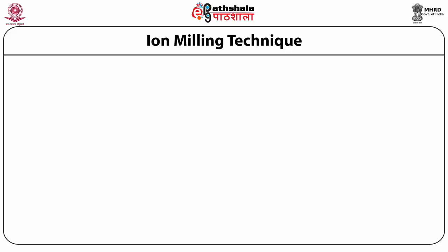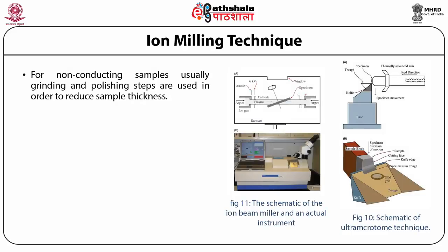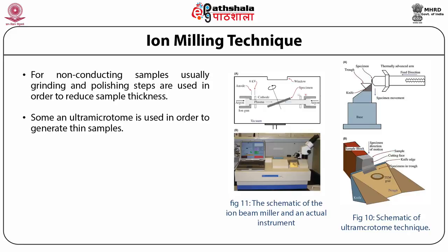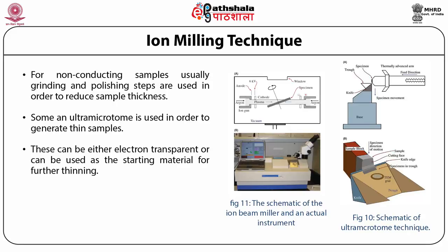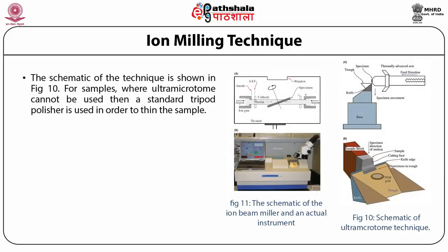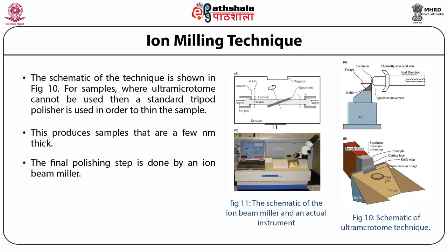The second technique is ion milling. For non-conducting samples, grinding and polishing steps are used to reduce sample thickness, and an ultramicrotome may be used to generate thin samples. These can be electron transparent or used as starting material for further thinning. For samples where an ultramicrotome cannot be used, a standard tripod polisher is used to thin the sample to a few nanometers thick, and the final polishing step is done by an ion beam miller.